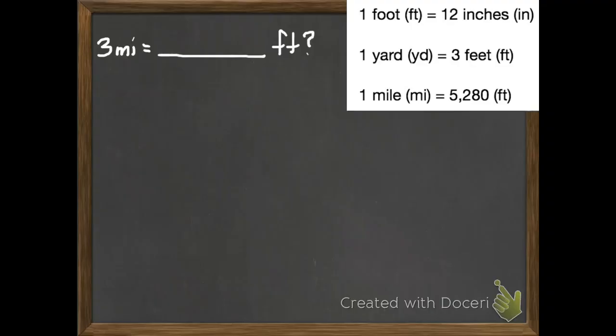1 foot equals 12 inches. 1 yard equals 3 feet. 1 mile equals 5,280 feet. We're going to be using these facts today to help us convert different units of customary measurement.